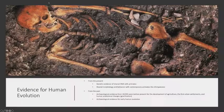Up until this point, we've been looking at a number of things. We explored some of the present or contemporary evidence for evolution. We looked at the genetic evidence of shared DNA with primates. We looked at shared morphology and behavior with contemporary primates like chimpanzees. And then with the last lecture, we began to explore evidence from the past — archaeological evidence about 10,000 years before present for the development of agriculture, the development of human urban settlements, and the kinds of human anatomical changes that we can see in the archaeological record.